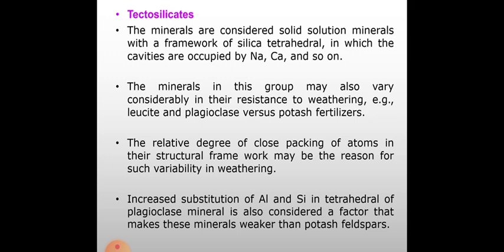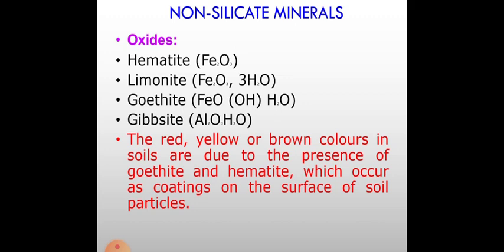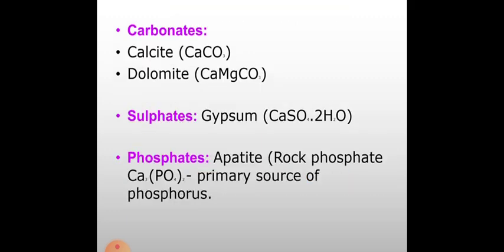Non-silicate minerals — oxides: hematite, limonite, goethite, gibbsite. The red, yellow or brown colors in soils are due to the presence of goethite and hematite, which occur as coatings on the surface of soil particles. Carbonates: calcite, dolomite. Sulfates: gypsum. Phosphates: apatite (rock phosphate), the primary source of phosphorus.